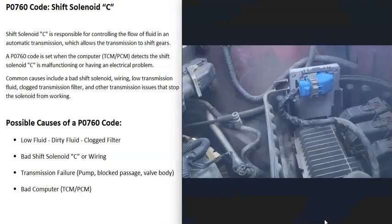The last thing on the list is a bad computer — some kind of issue with the transmission control module or the powertrain control module. This isn't too common; usually when you get a P0760 code, it's going to be something else. But if you do think there's an issue with the computer, be sure to check your battery and all your battery connections. You can even test the alternator output to be sure it's charging correctly, because all these computers need a good stable power supply or else they can throw codes and do strange things.